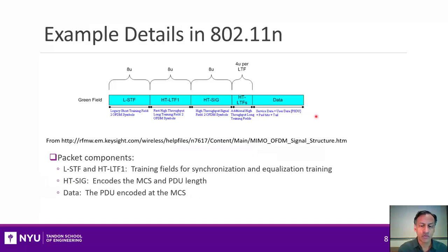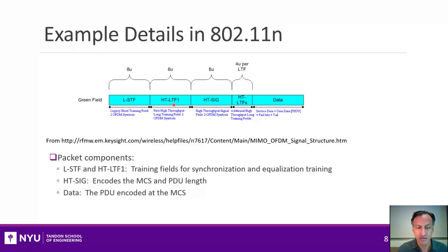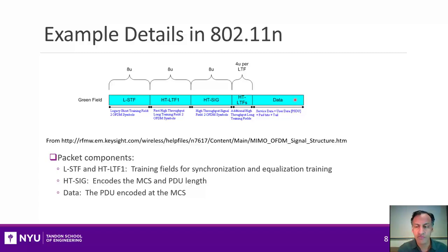Let's look at what these fields look like in a typical standard. This is the 802.11n version of the standard, but they're all at this high level kind of similar. You see some training fields at the beginning — a short training field and a long training field — and then the signal field which carries the MCS format. There's some more training, and then there's the data field, which actually contains that frame checksum.